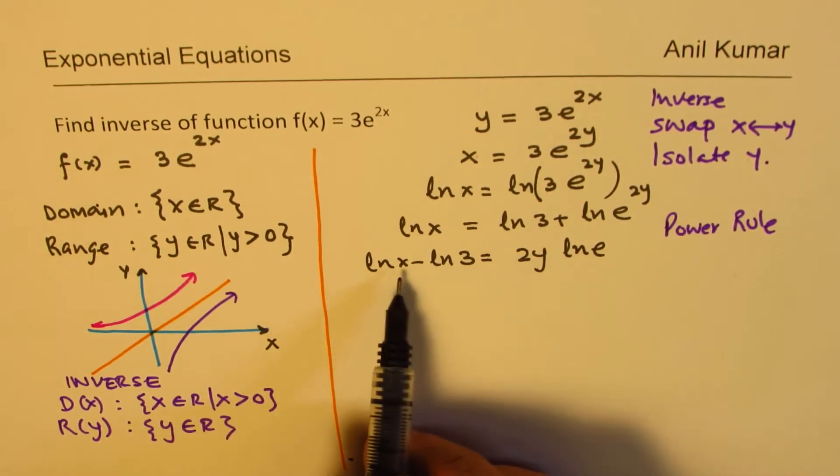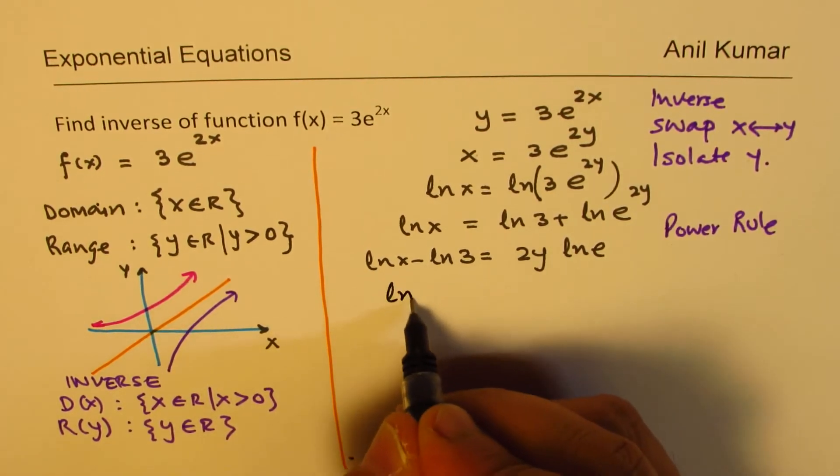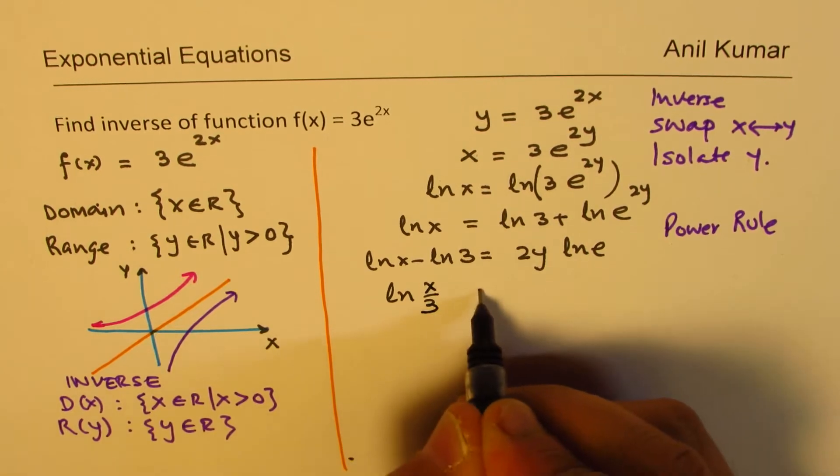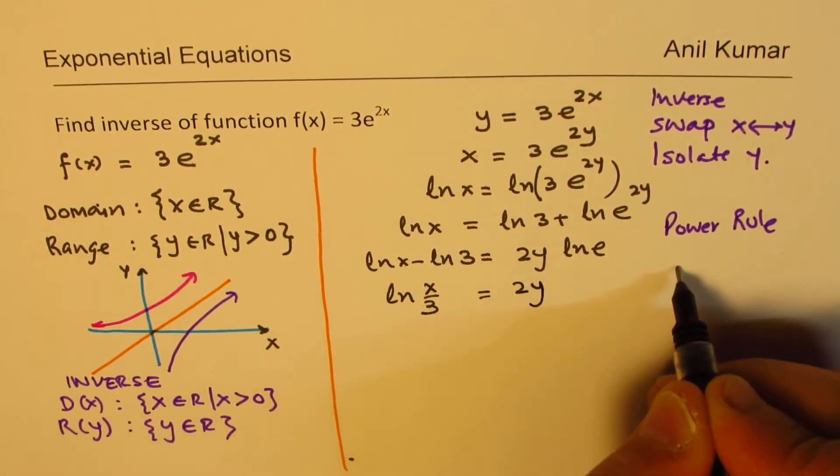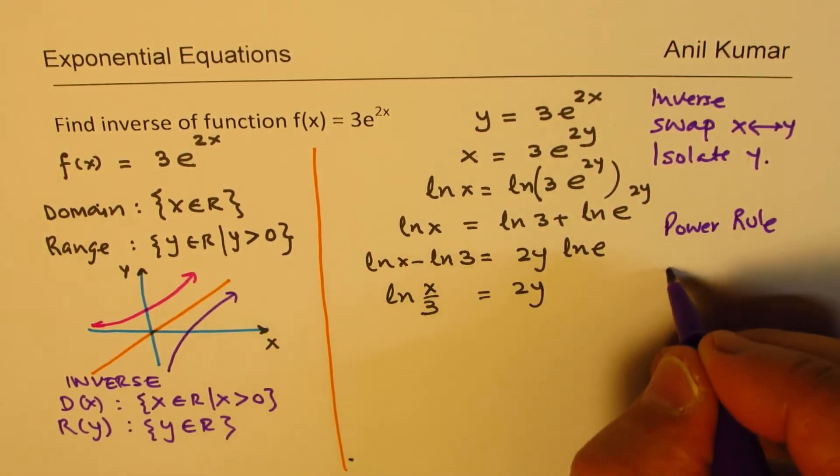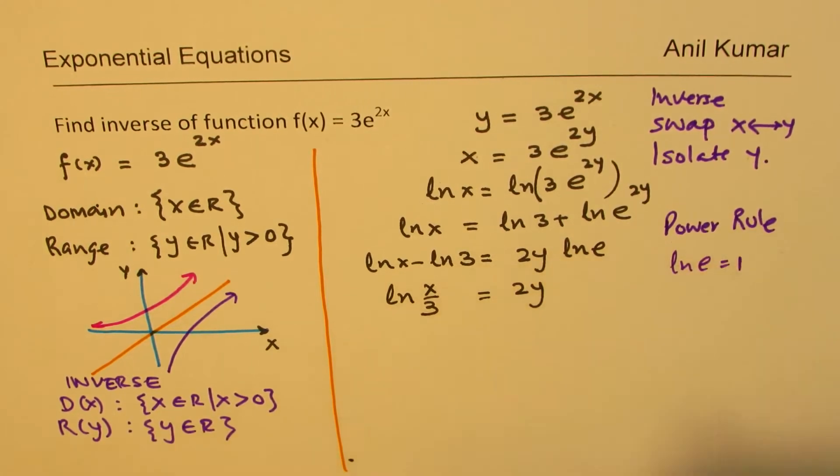Here, since we are talking about take away, we could write this as ln(x/3) equals 2y. Since we know that ln(e) is 1.